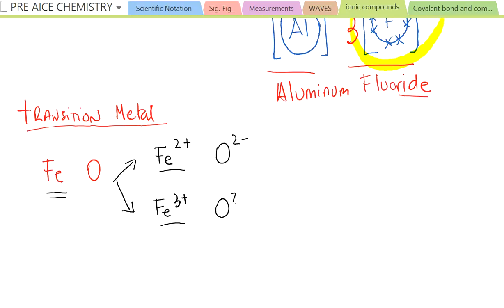So it's going to be 2- and 2-. That is no problem. So in this case, we are going to work out the formula, and the formula is going to be FeO, because the two and the two were simplified. Is that okay?